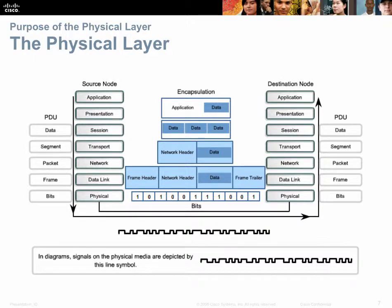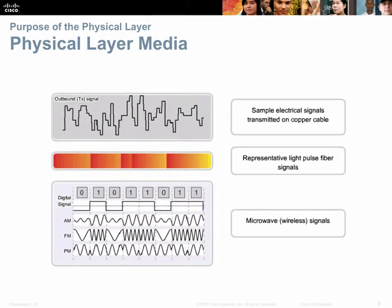Looking at the OSI model — the seven-layer model of encapsulation — the physical layer is where the bits meet the wire. The wire, called the media, could be copper, fiber optic, or radio frequency. In every case, the ones and zeros called bits are encoded into an electrical signal, a light signal, or a radio frequency signal to transport across that wire. You can see illustrations of what that signaling might look like on an oscilloscope.